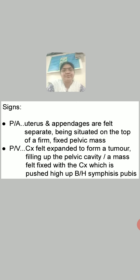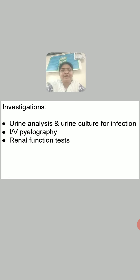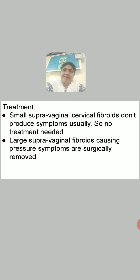Then we come to investigations. The important investigations in case of cervical fibroid include urine analysis and urine culture for infection, intravenous pyelography, and renal function tests.